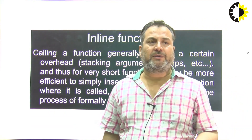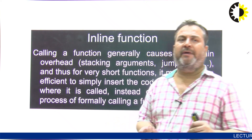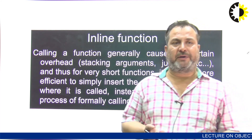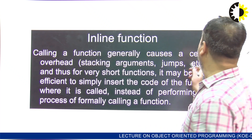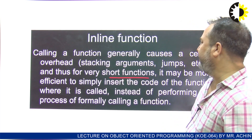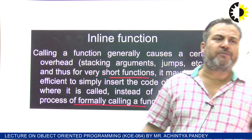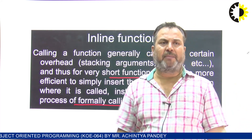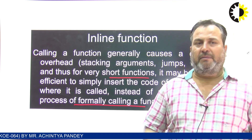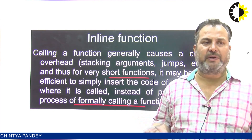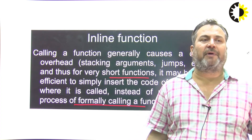Another category of function is inline functions. In C++, we make use of inline functions. If the code is very small — say 1 or 2 lines — then we could make the function inline to reduce the cost of the call. Calling a function generally causes overhead like storing arguments, jumps, etc. For a very short function, it may be more efficient to simply insert the code where it is called instead of formally calling a function. If the code gets simply replaced just like a macro, then this type of function becomes an inline function.